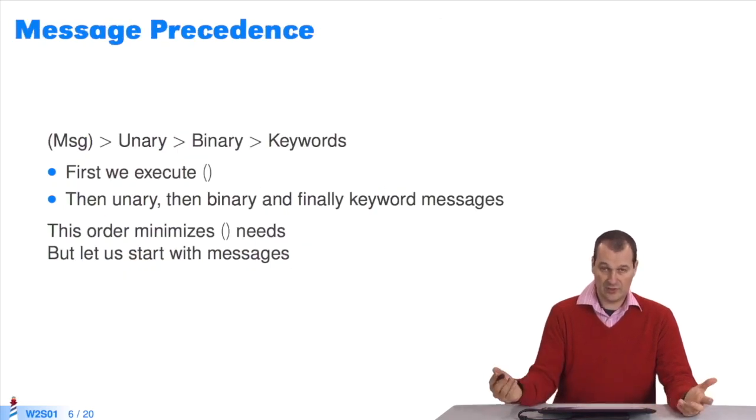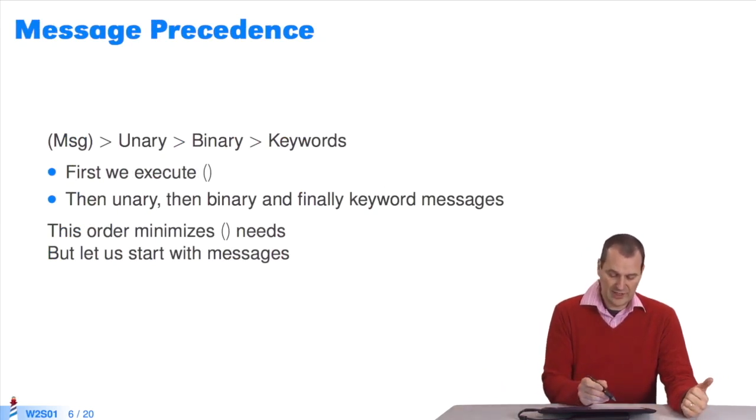What is the use of these three types of messages? It changes the way programs are executed. You always execute what's between parentheses first, then unary messages, then binary, then keywords. When at the same level, you use the same order from left to right.